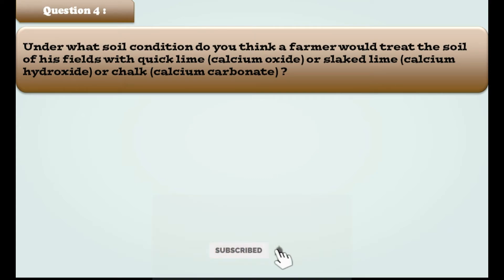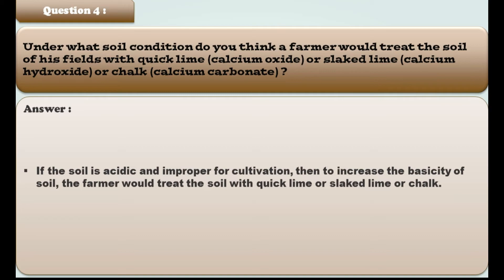Yeah, so here you have to use your general knowledge that when we will treat soil with such bases. If the soil is acidic and improper for cultivation we will make use of such bases and will neutralize acid present in that soil which makes soil improper for cultivation. So for that reason farmer would treat the soil with quick lime or slaked lime or chalk. Hope it is clear to everyone.